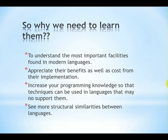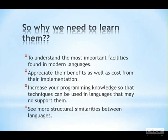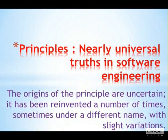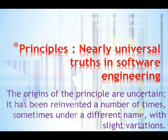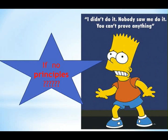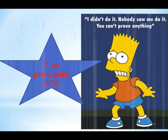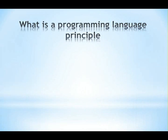Our presentation is about programming language principles. But first, it is important to know what a programming language is. Next, we will have a look at what the principles are. Principles are near universal truths in software engineering. The origins of the principle are uncertain and it has been reinvented a number of times with slight variations. This picture describes a situation where we don't have any principle — no one will be able to prove anything without these principles.